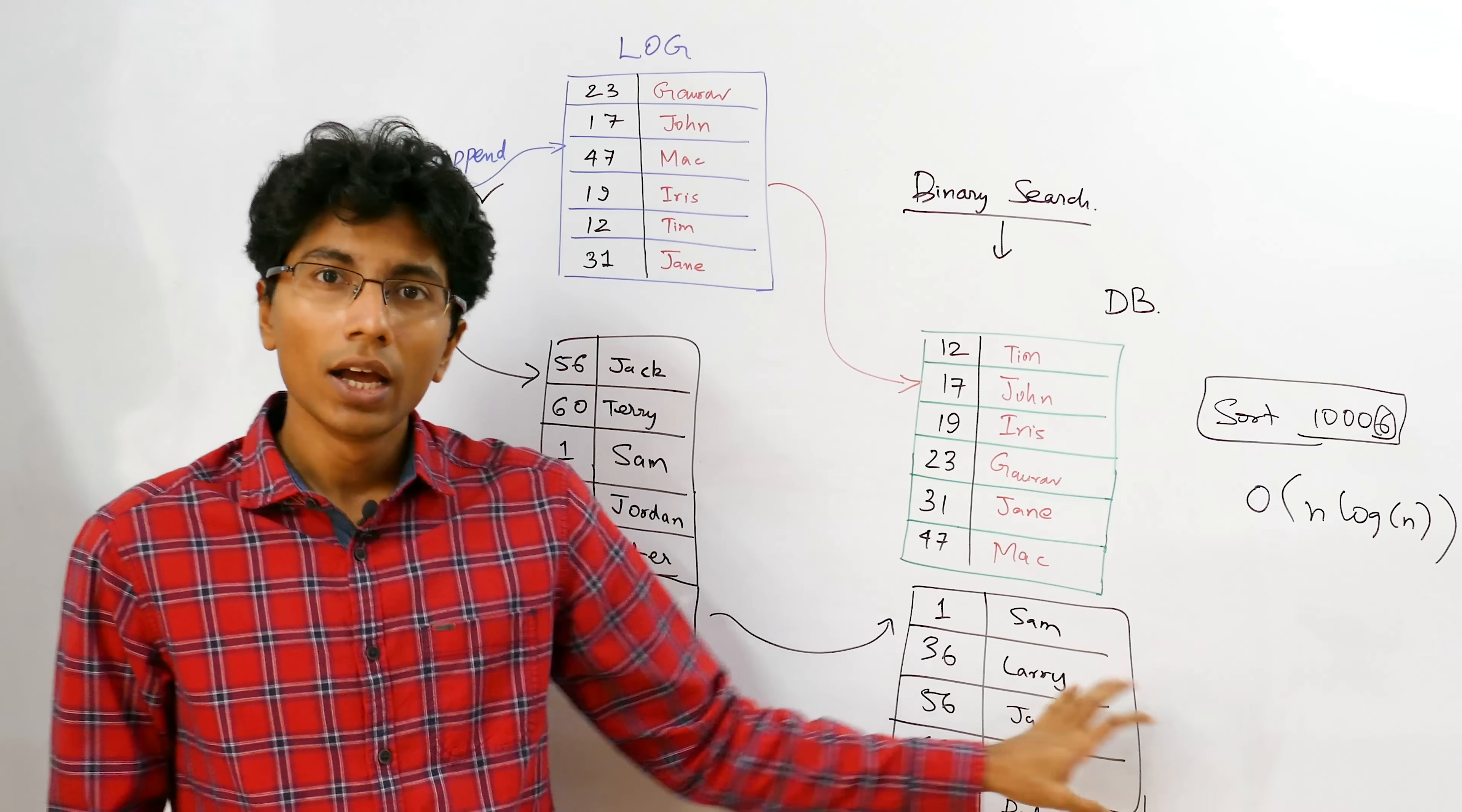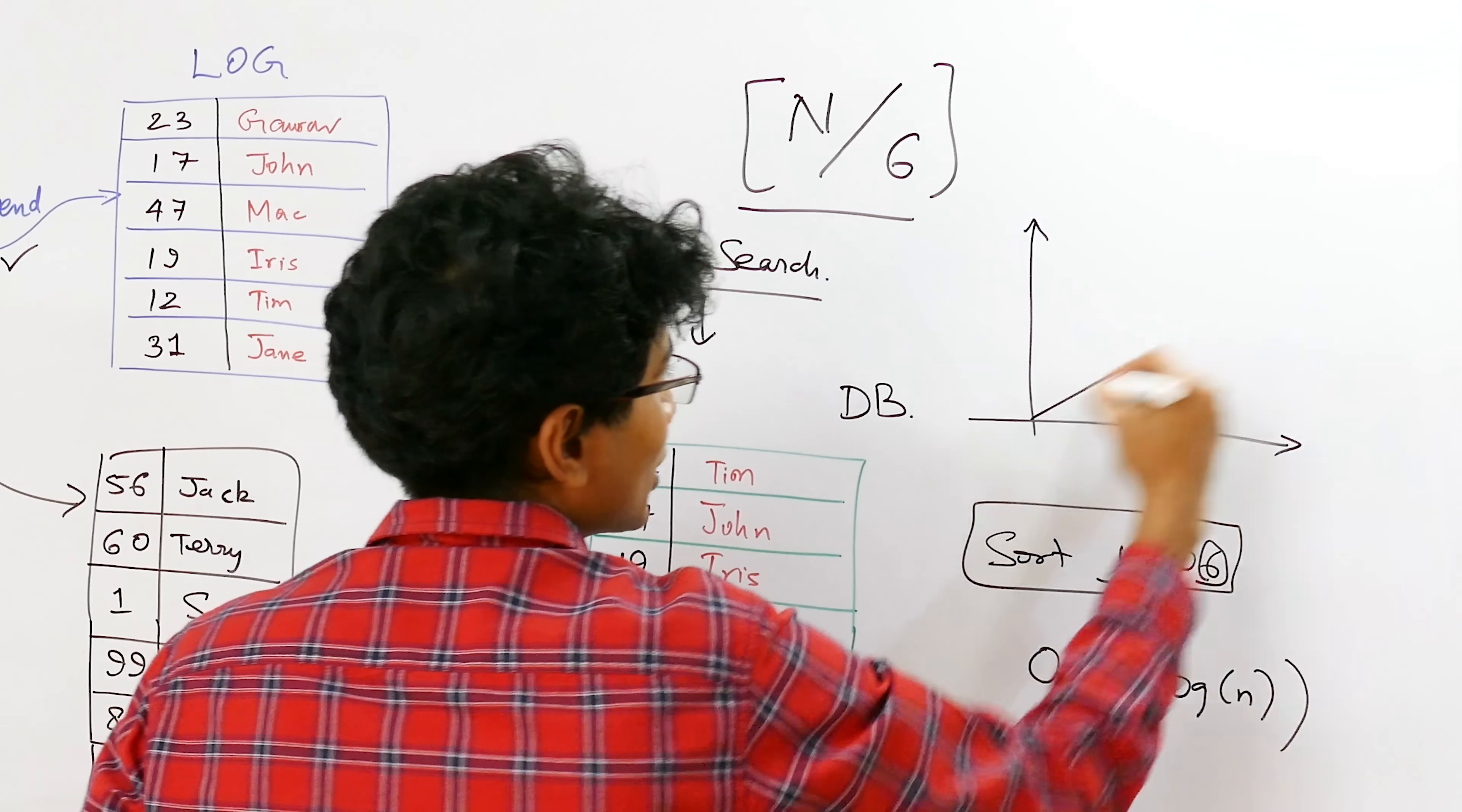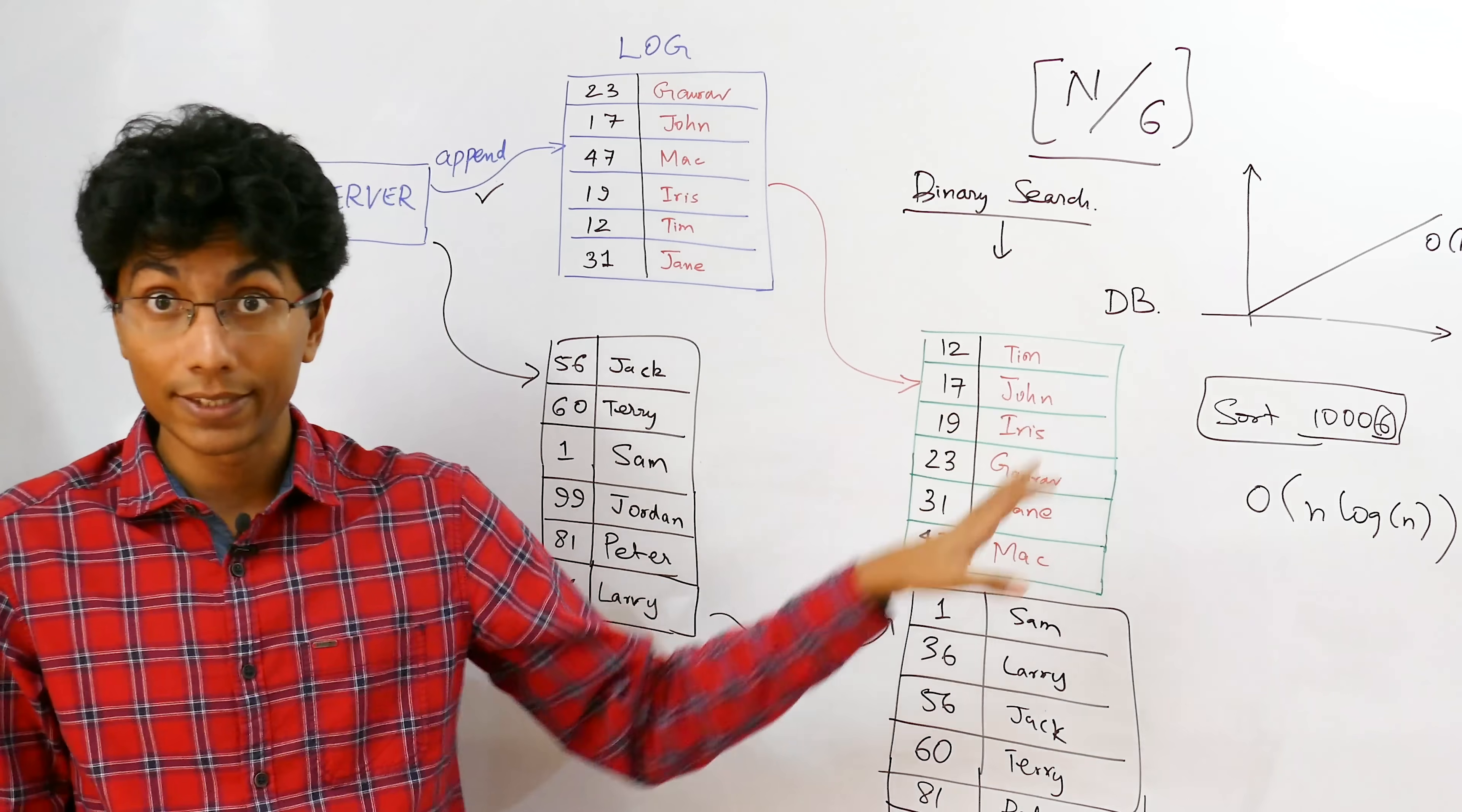So your write operations are reasonably fast even now, but your read operations are slightly slower. So if you have n insertions, the number of chunks you'll have is divided by six. If you draw the graph for this, it's after all a linear graph. So this is again, order n, n by six is the graph literally. So your read times are extremely slow even now. Imagine in something like Facebook, you have billions of records in the database. One billion divided by six is still very, very slow. So how do you optimize this?